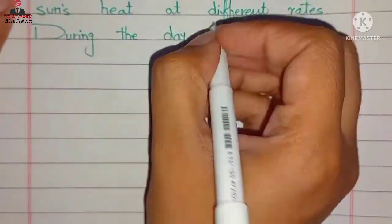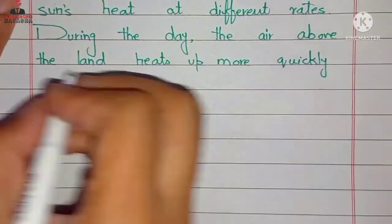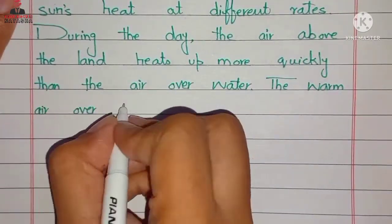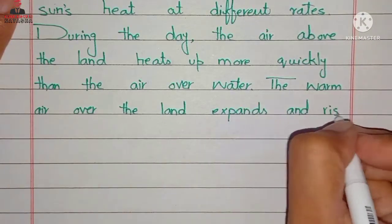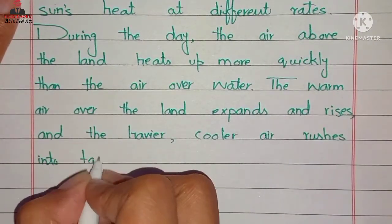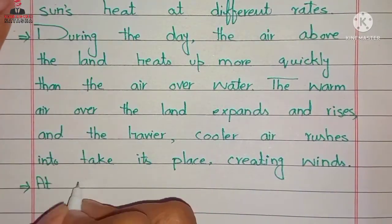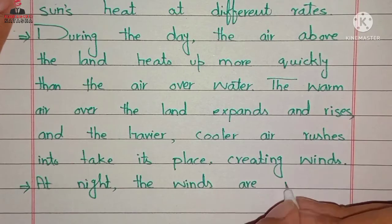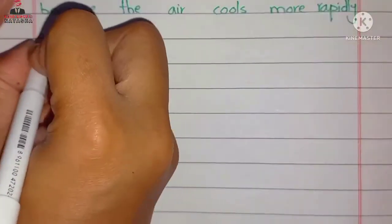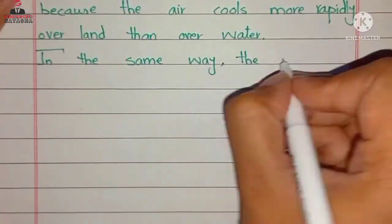During the day, the air above the land heats up more quickly than the air over water. The warm air over the land expands and rises, and the heavier cooler air rushes in to take its place, creating winds. At night, the winds are reversed because the air cools more rapidly over land than over water.